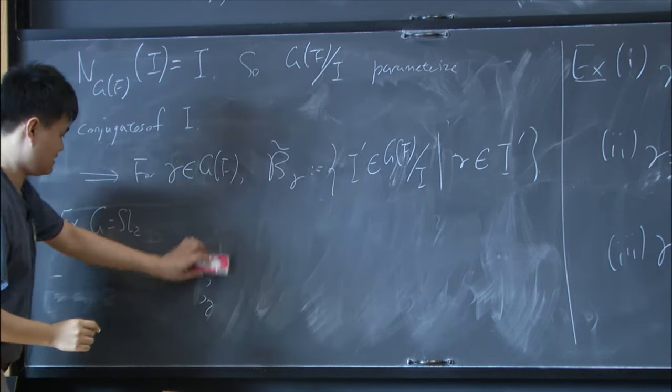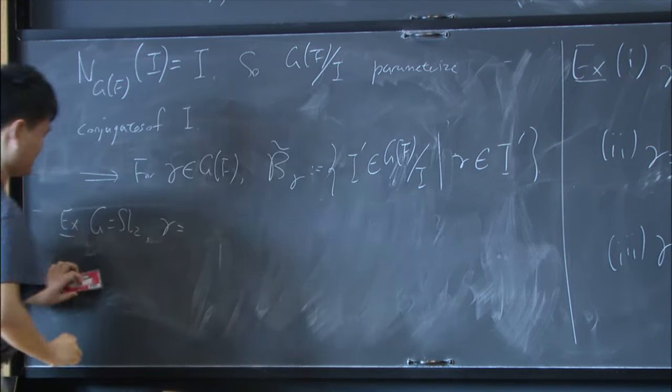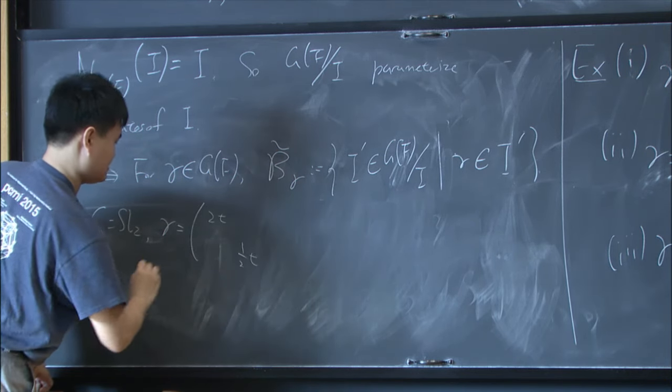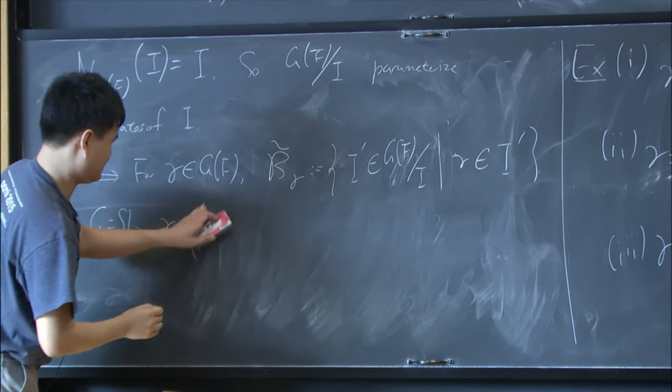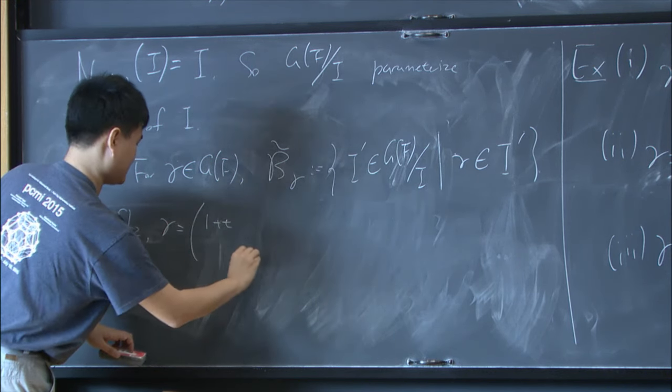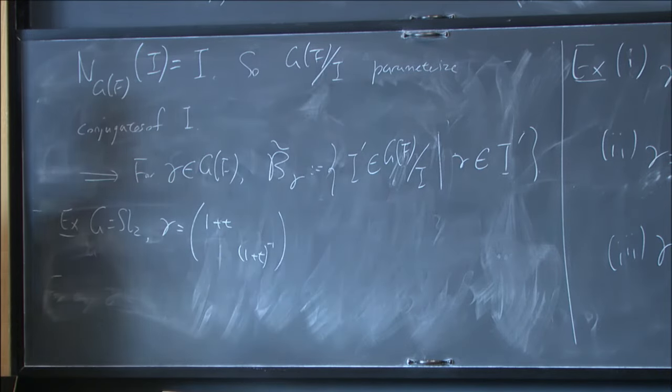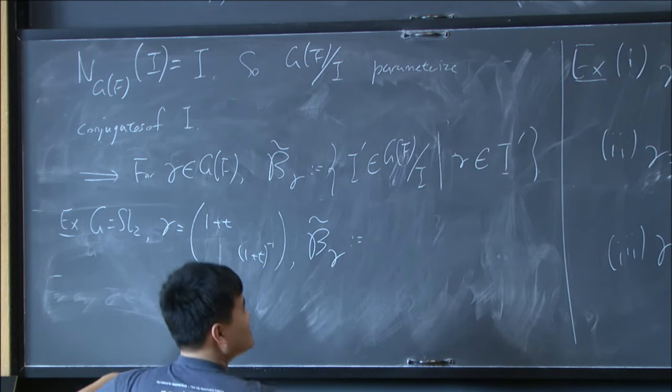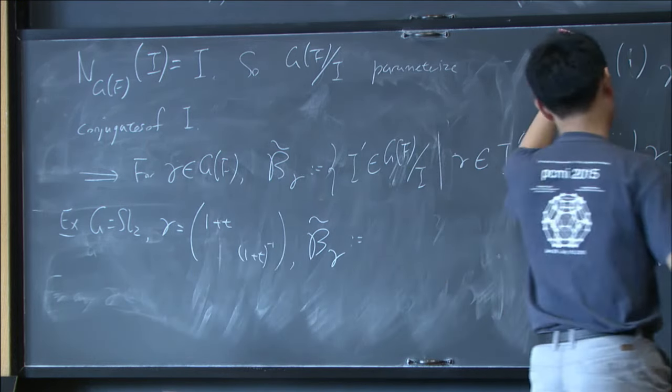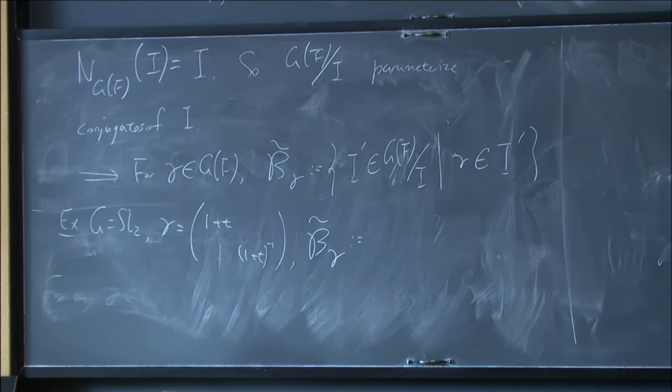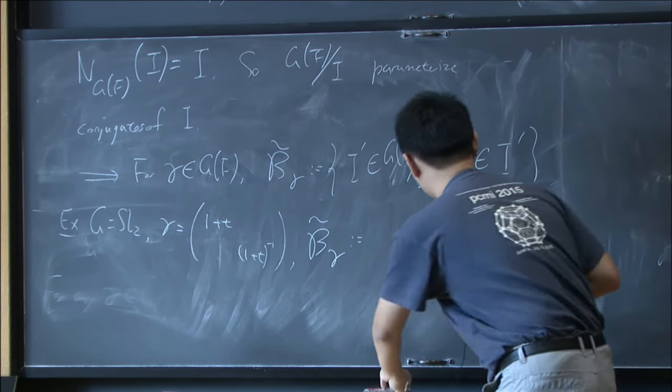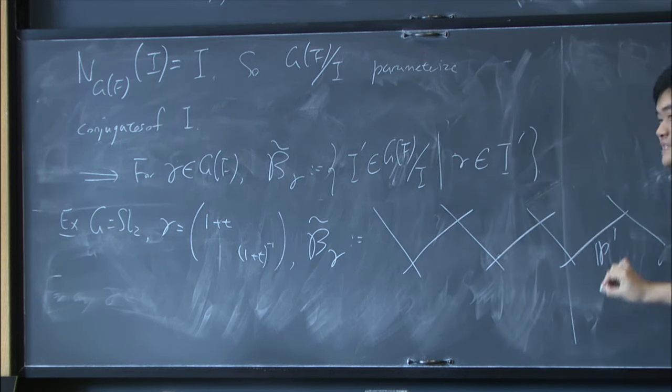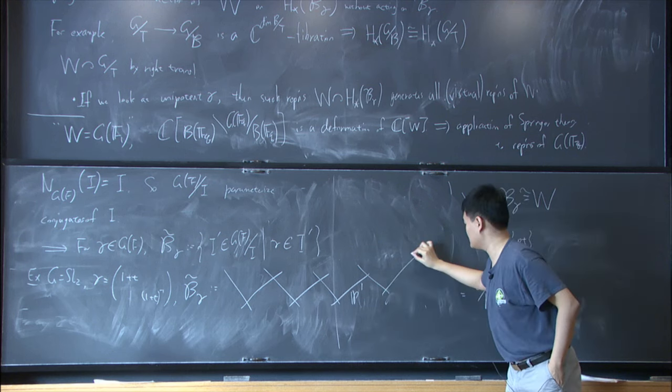So let me give an example. SL_2. And gamma is like 1 plus t and 1 plus t inverse. In this case, this thing is hard to see why, or it's not. But try to see why. In one minute, it looks like a chain of P^1. An infinite chain in both ways.